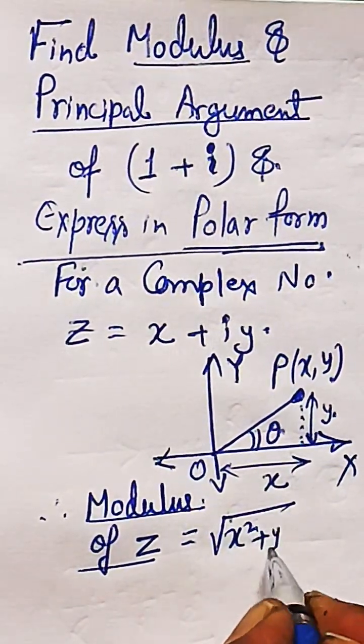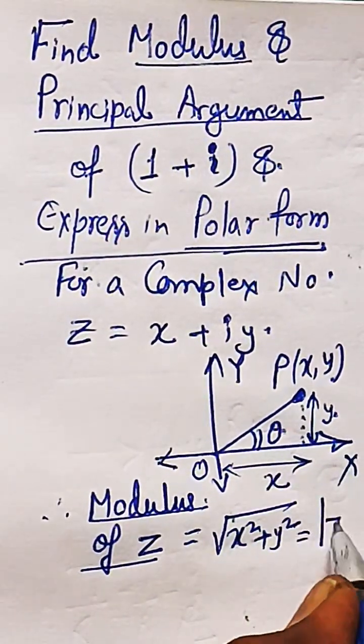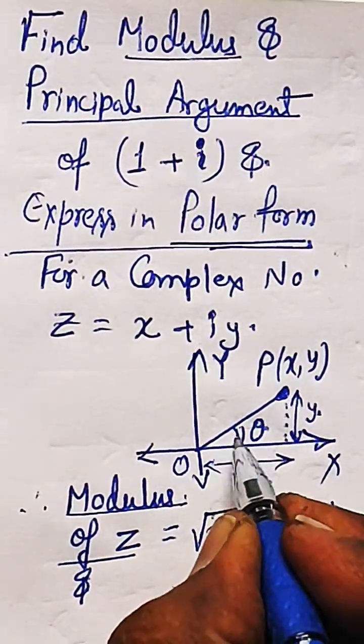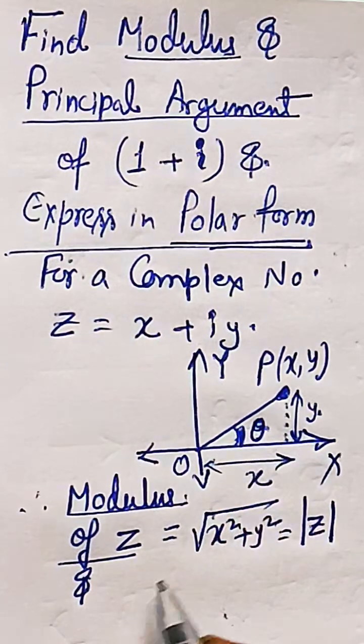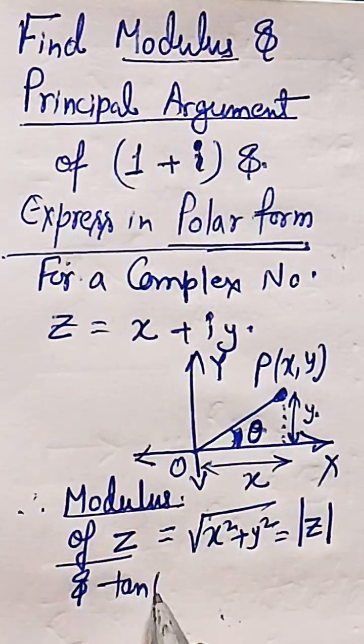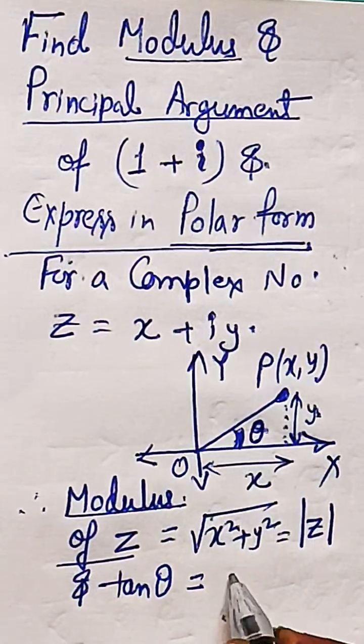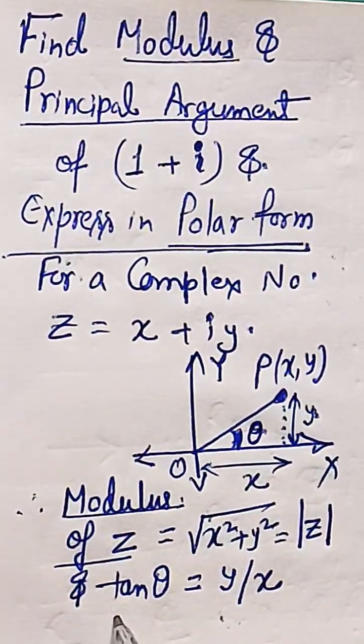So in this case the modulus of the complex number is root over of x square plus y square. If you remember the Pythagorean theorem, the hypotenuse, so this is the modulus of the complex number. And the slope is theta, so tan of theta is given as y by x, y coordinate divided by x coordinate. This is tan theta for the given complex number z equal to x plus i y.